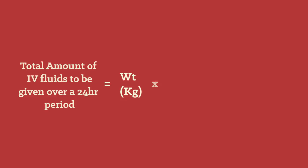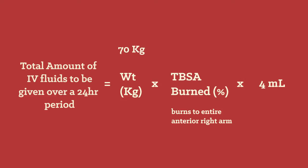So, for example, a 70 kilo male who sustains burns to the entire right arm, the chest and abdomen, has a total body surface area burned of 22.5%.